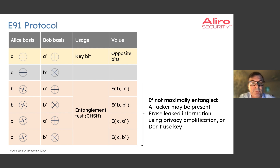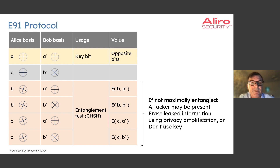If the S-value is greater than two but less than two times the square root of two, it shows that the photons are entangled but not maximally entangled. The amount of information leaked to Eve in this case can be determined using parameter estimation. And depending on how much information was leaked, Alice and Bob can either erase the leaked information using privacy amplification or conclude that the key cannot be used.